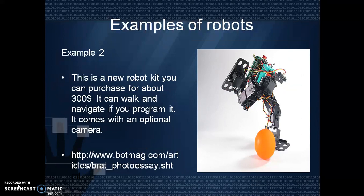In example two, this is a new robot kit. You can purchase it for about $300. It can walk and navigate if we program it. It comes with an optional camera, so here a camera sensor is used.